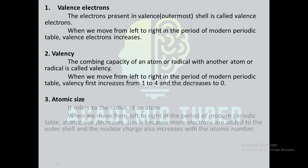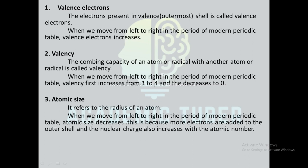Third one is atomic size, which refers to the radius of an atom. When we move from left to right in a period of the modern periodic table, atomic size decreases. This is because more electrons are added to the outer shell and the nuclear charge also increases with the atomic number.